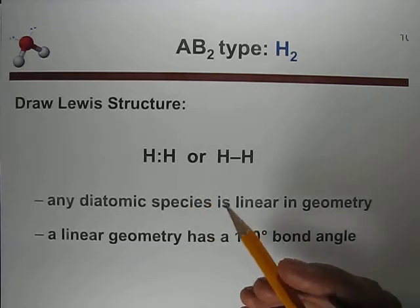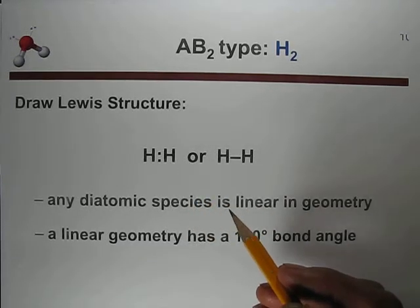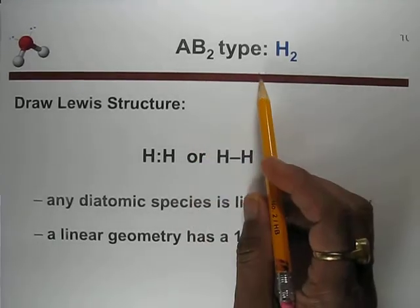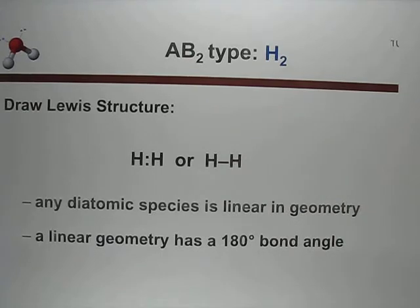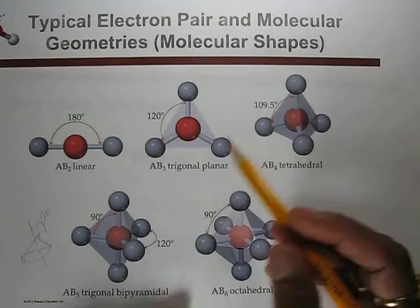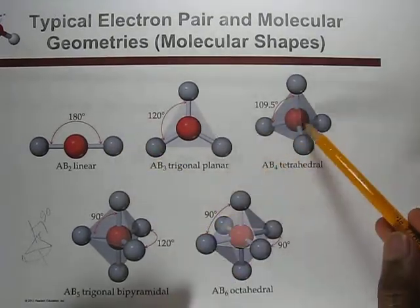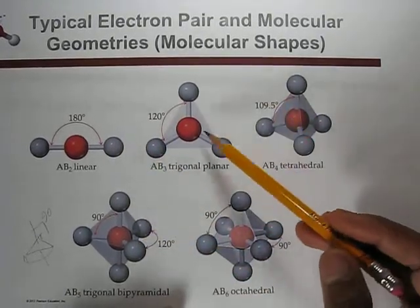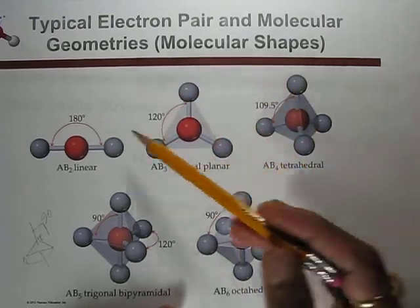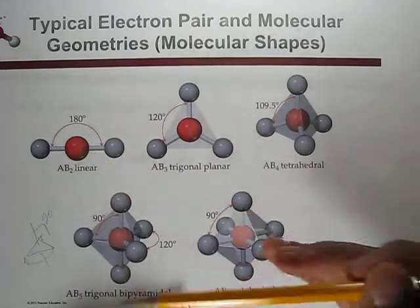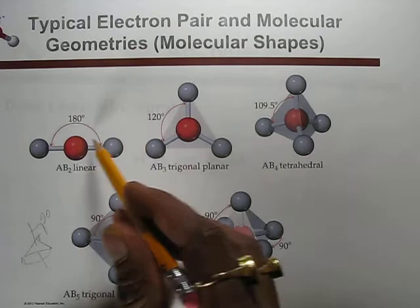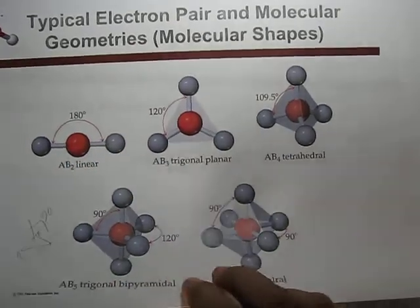Hello students. In this video we will study about the molecular and electron pair domain geometries for AB2 type of molecules. In the previous video we studied that there are 5 different types of molecular and electron pair geometries to cover. This is the first — AB2 type — which has the central atom at the center and two other elements around it.